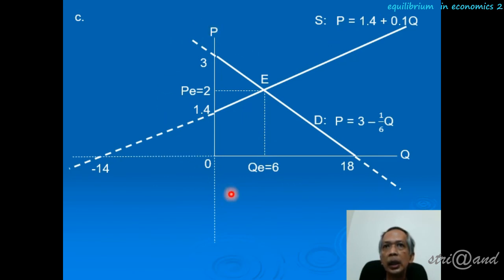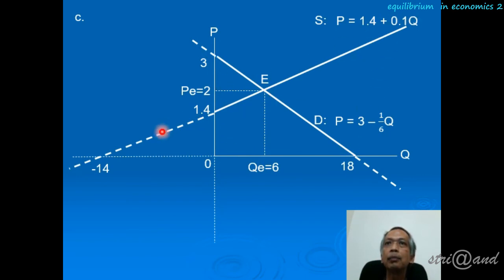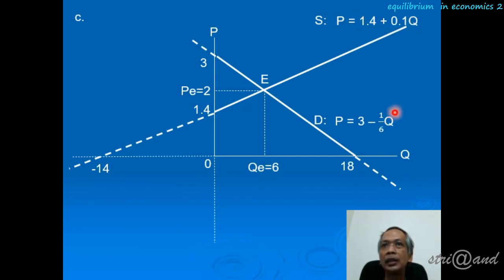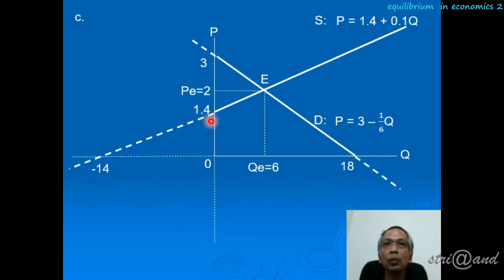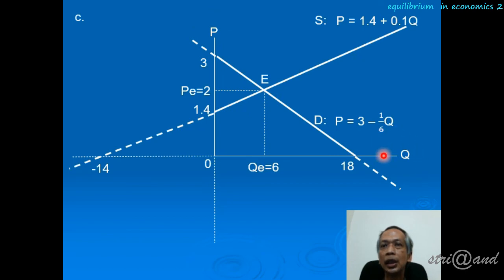This is the diagram for question C. Now the price is on the vertical axis and the quantity is on the horizontal axis. Everything else is the same — this is the demand and this is the supply — but because the price is on the vertical axis, we use the inverse of the supply equation and the inverse of the demand equation. The equilibrium price and quantity are the same, as are the intercepts: 18, minus 14, and 1.43. The only difference is the axis orientation. In economics, this is the standard illustration for a commodity market, with price on the vertical and quantity on the horizontal axis.